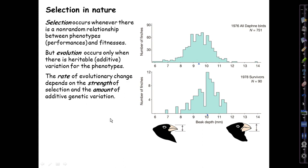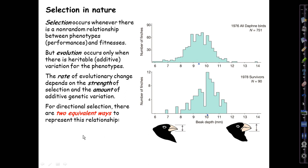For directional selection, which we'll confine ourselves to for now — in the next lecture we'll look at schemes of selection that may be other than directional — there are these two equivalent ways to represent this relationship. The big idea in this segment is that they are, in fact, completely equivalent; each is just more naturally suited to thinking about a different context.